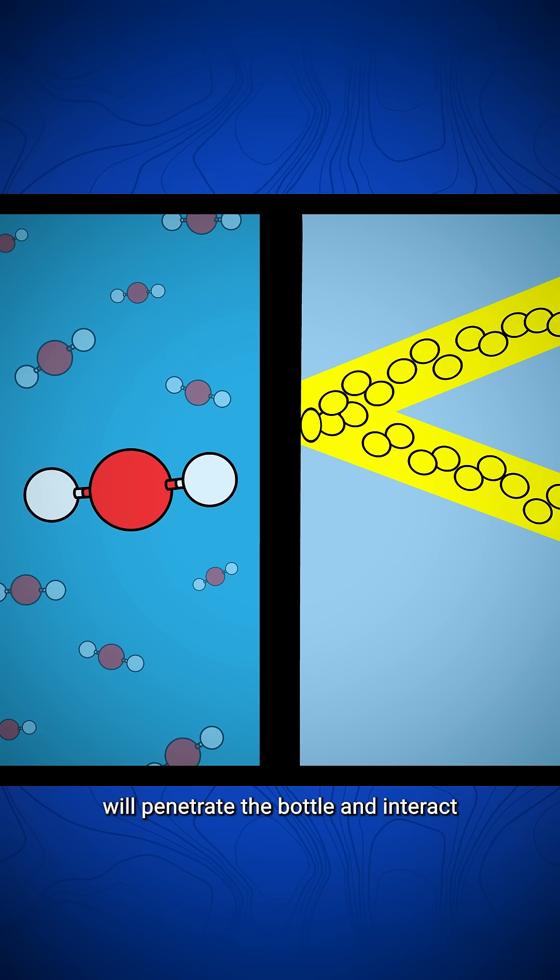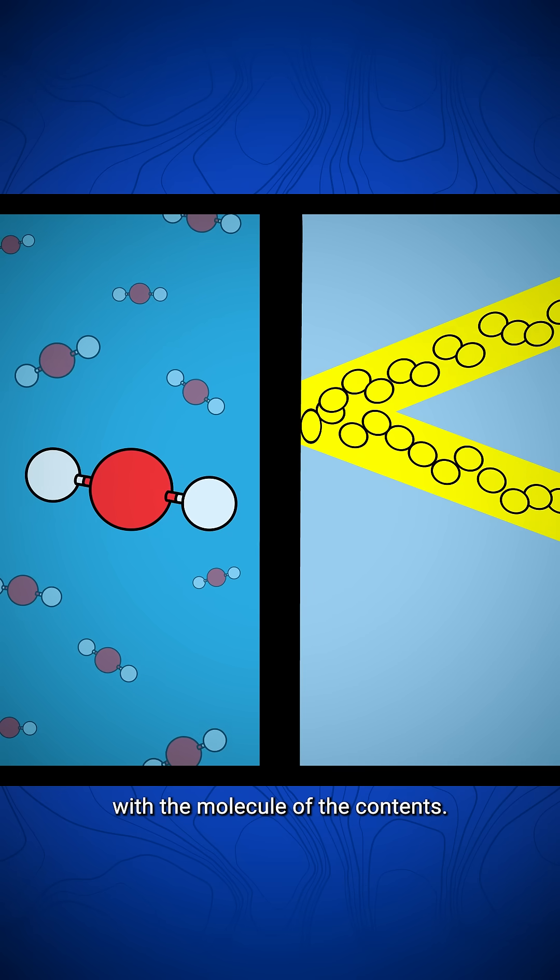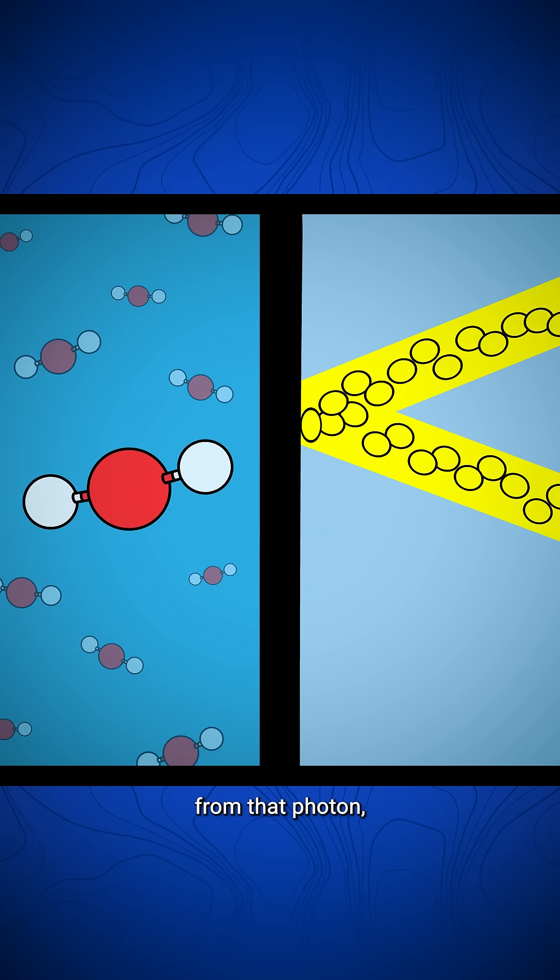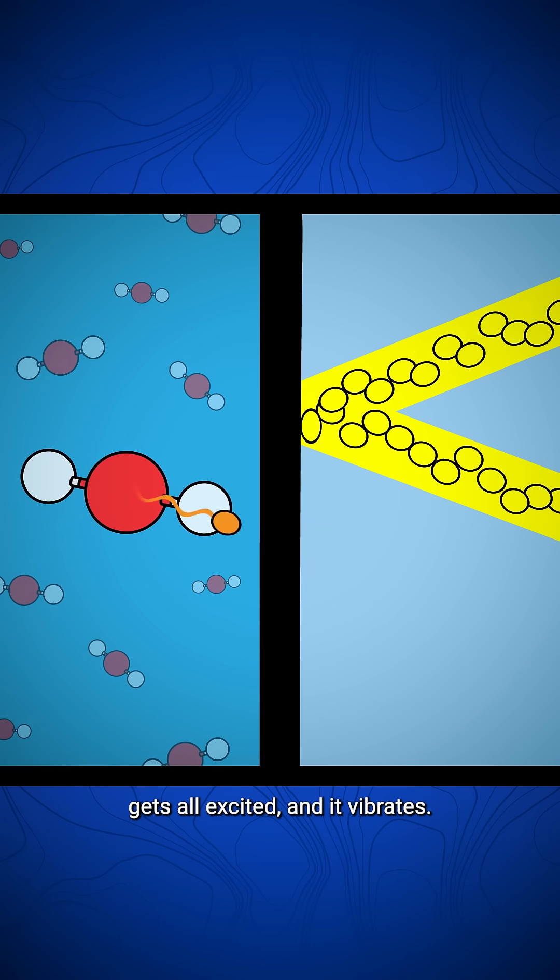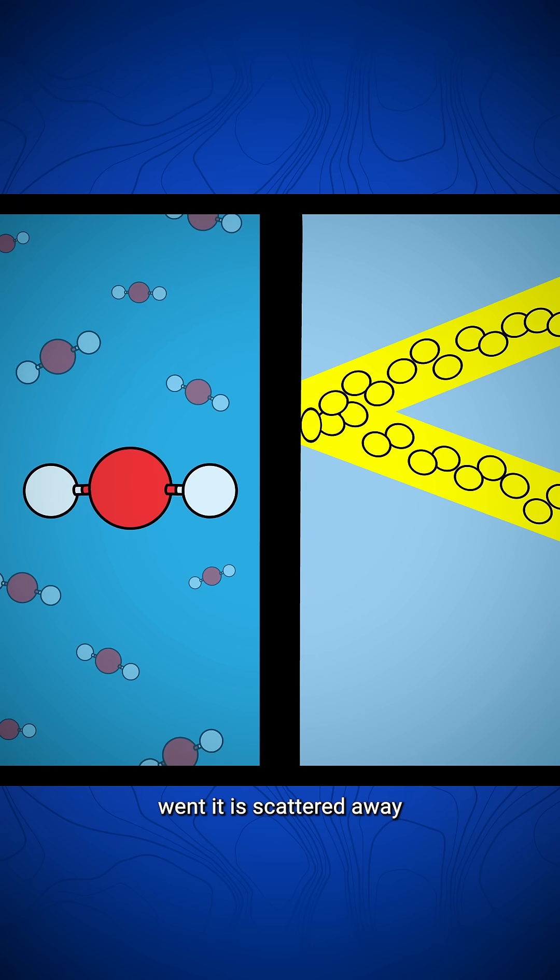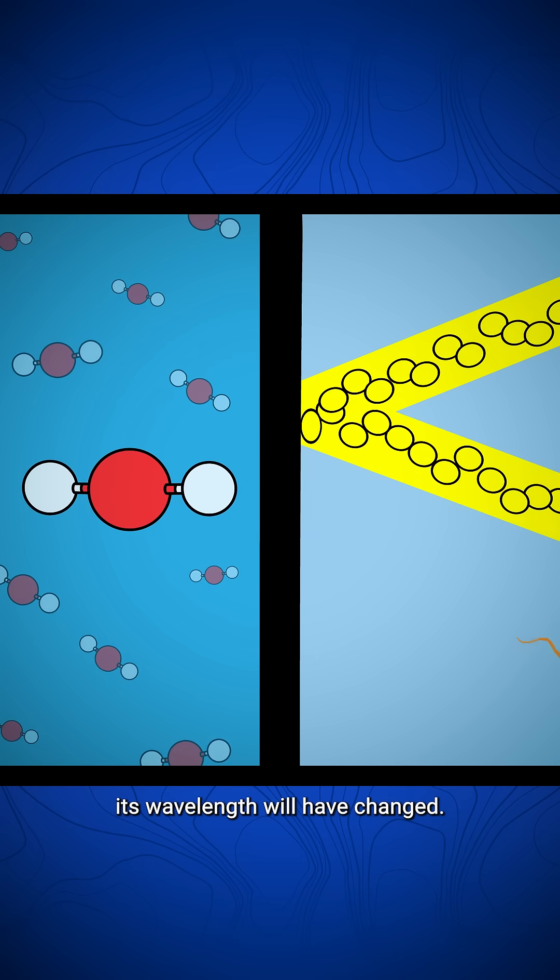Some of those photons will penetrate the bottle and interact with the molecules of the contents. That molecule steals a bit of the energy from that photon, gets all excited and it vibrates. Because the photon has had some of its energy stolen, when it is scattered away, its wavelength will have changed.